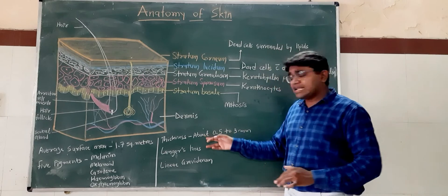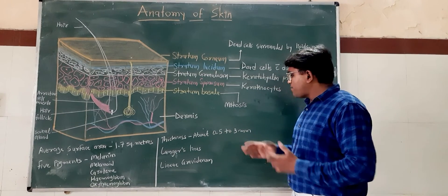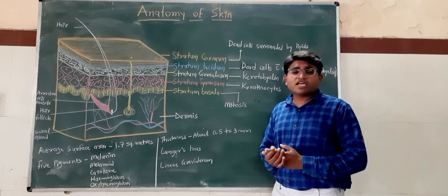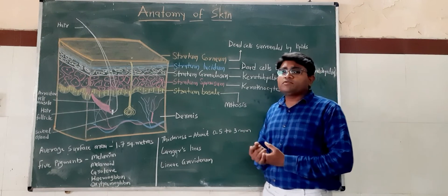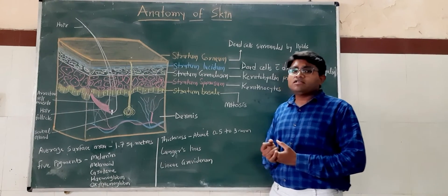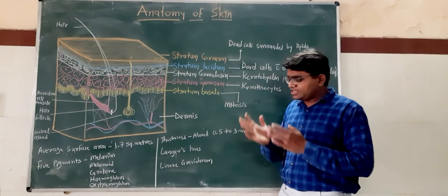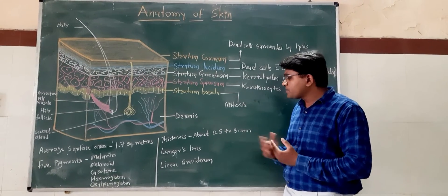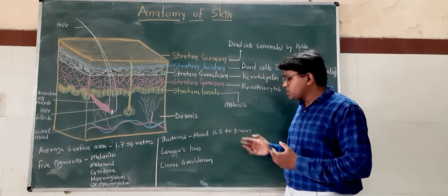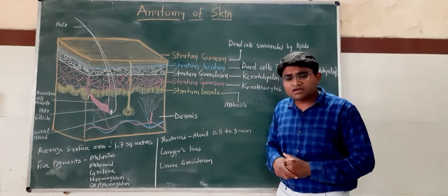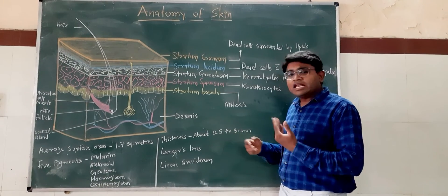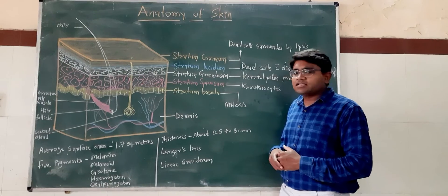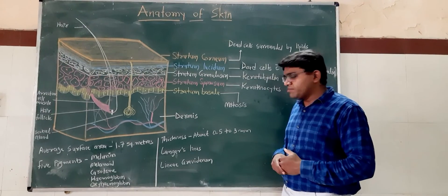The thickness of the skin ranges from about 0.5 to 10 millimeters in different areas of the body. In the palm and the sole area, the thickness is about 3 millimeters. And in the lips, it is the thinnest, about 1.5 millimeters.